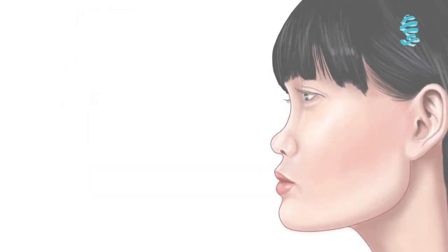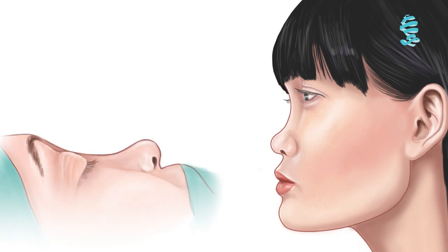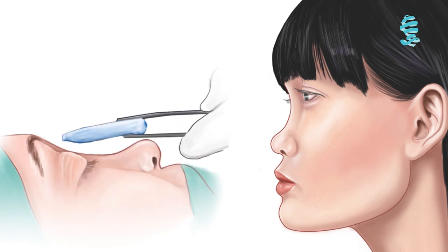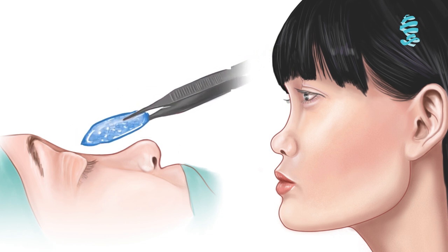In patients from the Far East, there is a need for augmentation of the dorsum rather than reduction. In these cases, cartilage from the nasal septum, ear, and rib may be used.